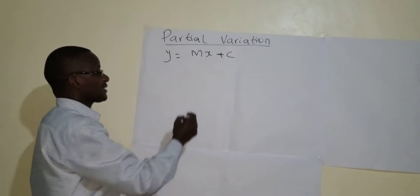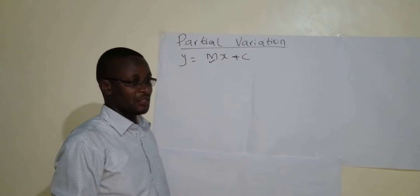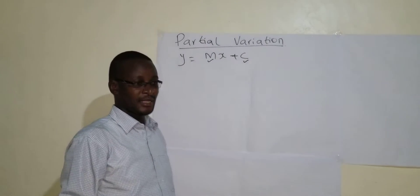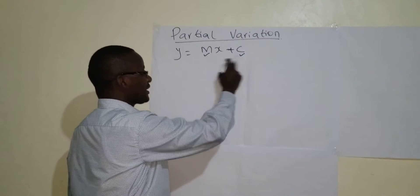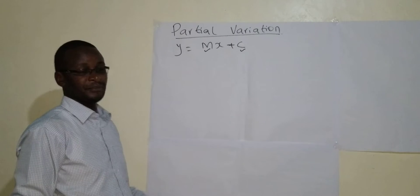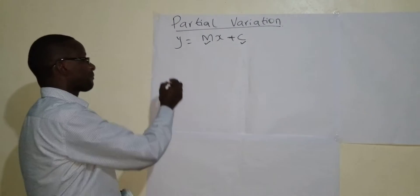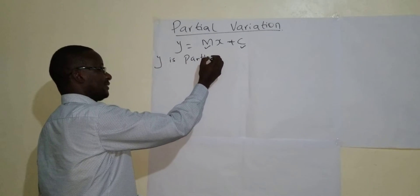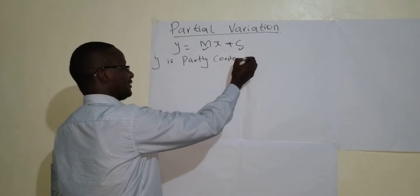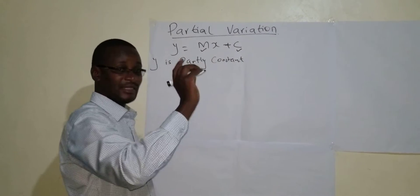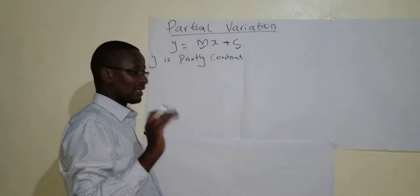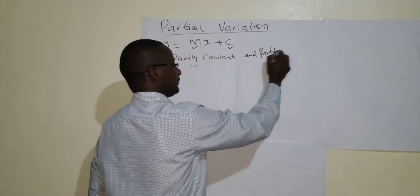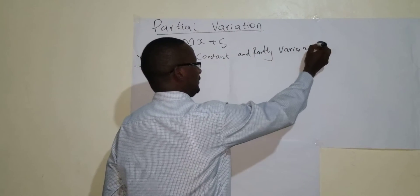You know that there are two constants here: m is a constant which is the gradient of a line, and c is also a constant which is the y-intercept. So if I was to put a statement in this equation from variation, it will be: y is partly constant — this part is just a constant, it does not have a variable — and partly varies as x.